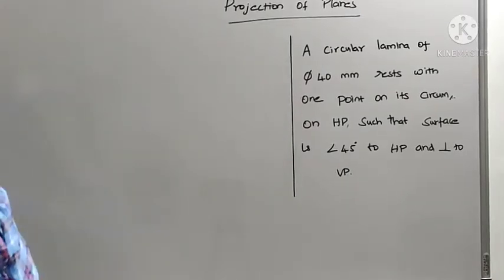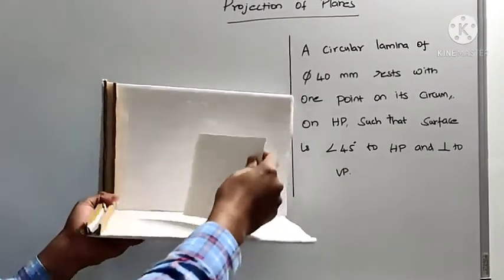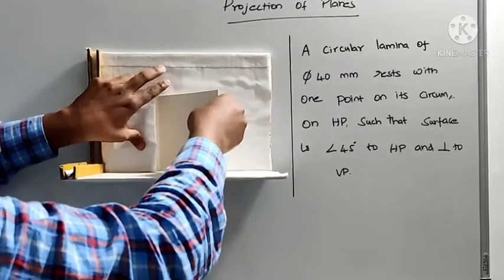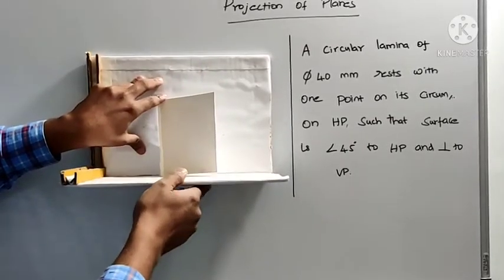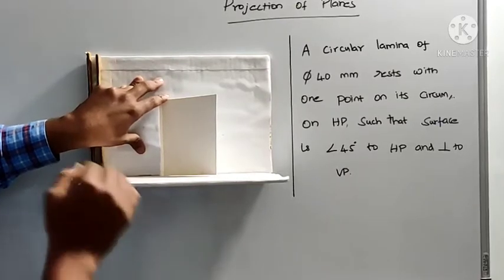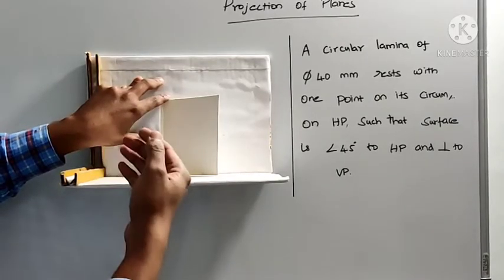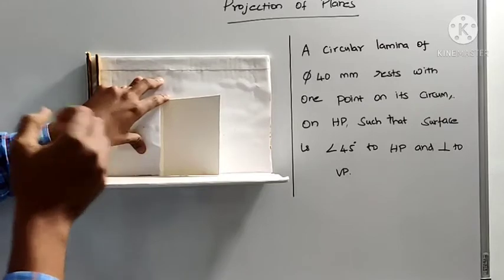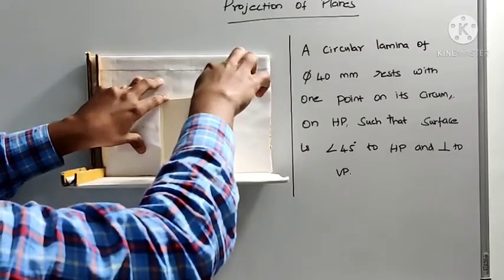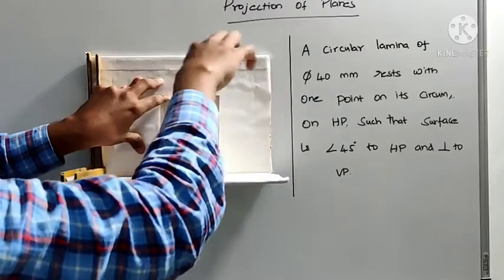When the surface is inclined to one particular plane, what will happen? For instance, let's take the same square lamina. This is my vertical plane and horizontal plane. The surface of the lamina is inclined at alpha to the vertical plane, and the lamina is perpendicular to the horizontal plane. When you position it in such a way — surface inclined to one plane and perpendicular to the other — in the front view you will see the projected shape, not the true shape and size. One projector will trace one edge, and two projectors will trace these two edges, and you will get a shape.